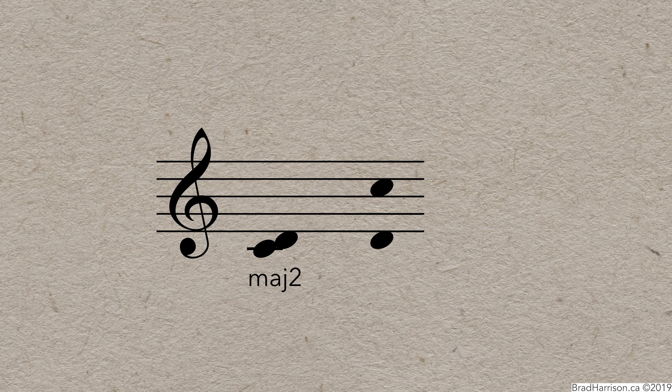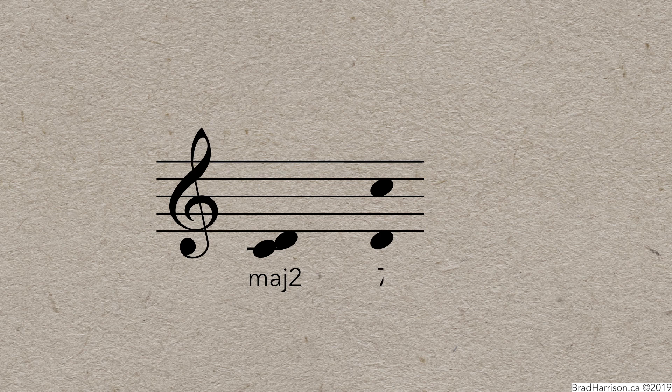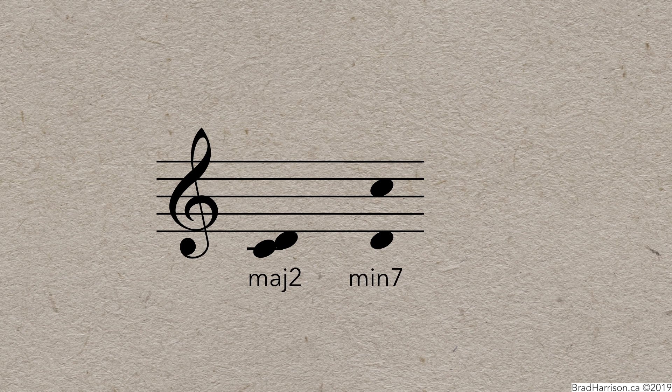There are two ways to figure out what the new interval is. The first one is, treat it like any interval, and evaluate it based on the bottom note. D to C is a 7th. Since C is normally sharp in D major, it's been made a semitone smaller, so this interval is a minor 7th.